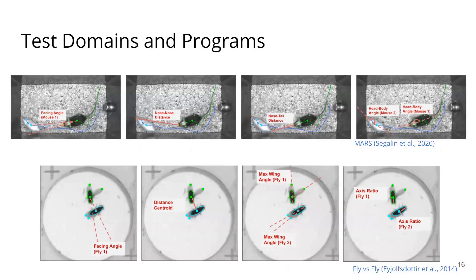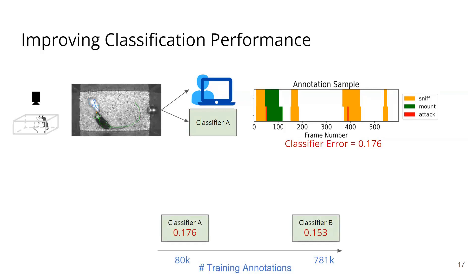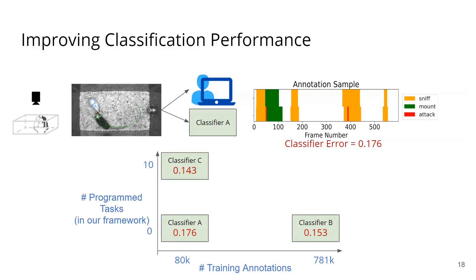We test our approach on data from behavioral neuroscience. The programs we use are based on features designed from existing works, such as facing angle and distance between agents, or relative locations of different body parts. Our approach provides an alternative to data annotation to improve classifier performance. For example, on the mouse dataset called MARS, the annotator can reduce classifier error by annotating around 700,000 more frames. Task programming provides an additional dimension for domain experts to improve classifier performance.